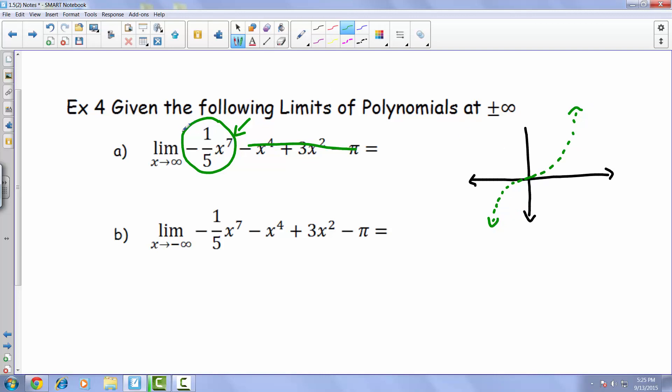Now we notice though that that leading coefficient has a negative, and as a result what that's going to do with our graph is actually flip that S. So we should see something more like the red.